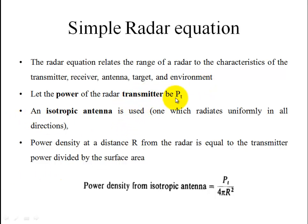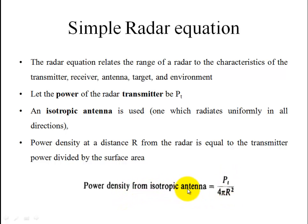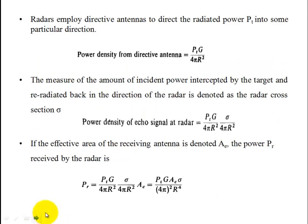First, the power of the transmitting antenna is denoted as Pt. Using an isotropic antenna — which transmits signal uniformly in all directions — the power density from the isotropic antenna is the transmitting power divided by the surface area: Pt divided by 4πr².